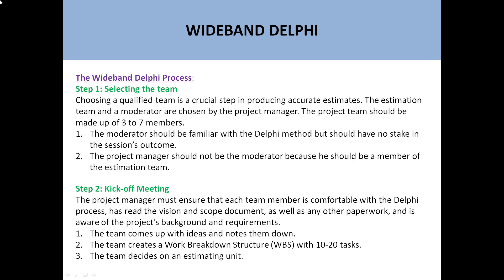The next step is the kickoff meeting. The project manager should ensure that all team members have the vision and scope document and are clear about what they want to achieve and estimate. The team comes up with ideas, notes them down, creates a work breakdown structure with 10 to 20 tasks, and decides on an estimation unit. In the kickoff meeting, you initiate things and start the estimation.